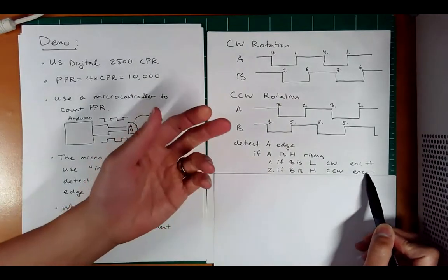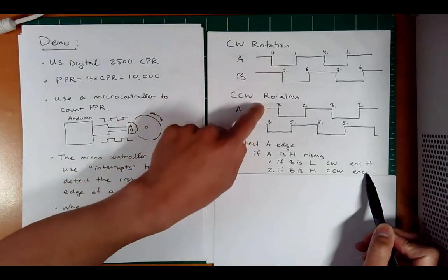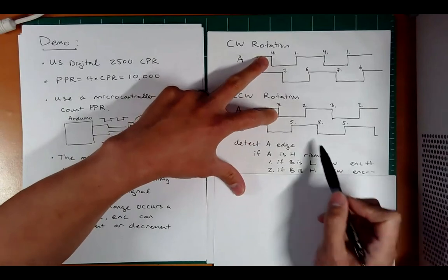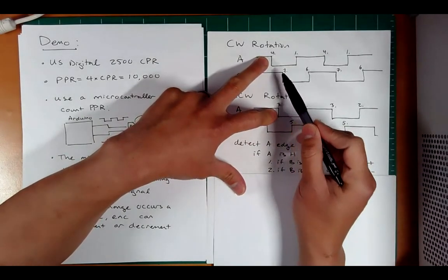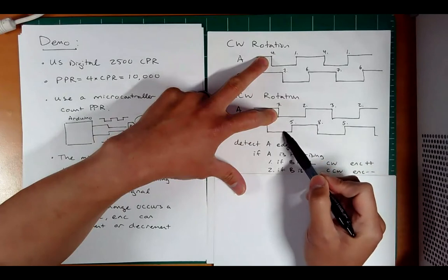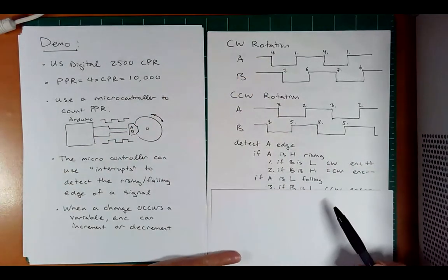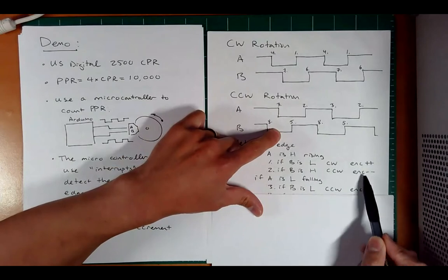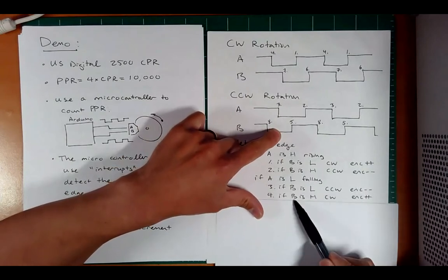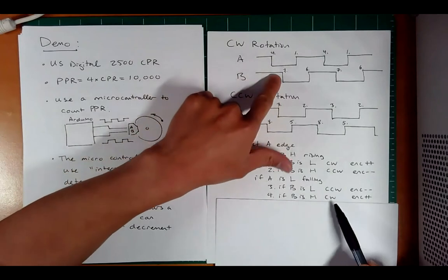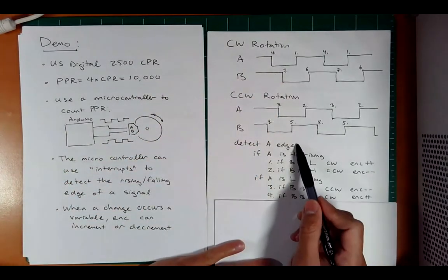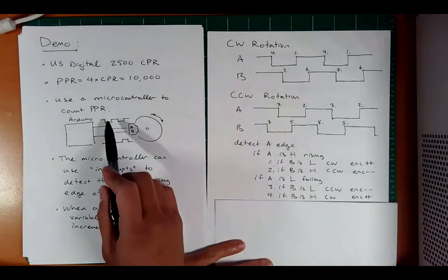Now, what if A was falling? What if we detect a falling edge on A? So we can look at three and four now. So if we detect a falling edge on A, and if B is high, we went clockwise, and if B is low, we went counterclockwise. And so we can write this down. If A is low and falling, if B is low, which is this one, we must have went counterclockwise. And if B is high, if we've got a falling edge on A and B happens to be high, then we can see that went clockwise.